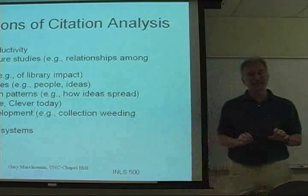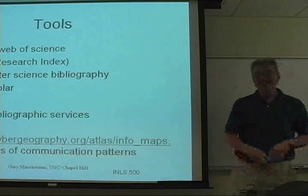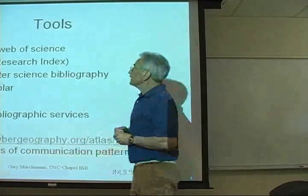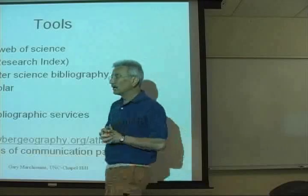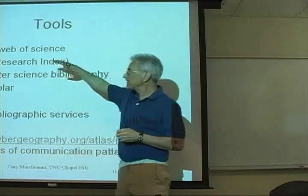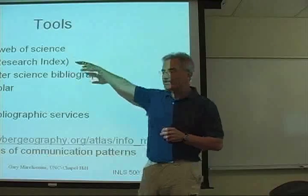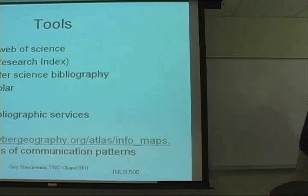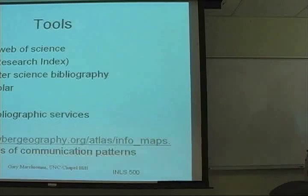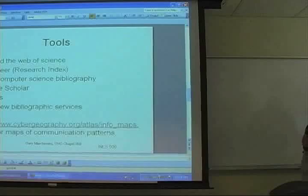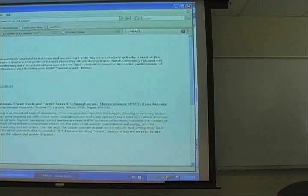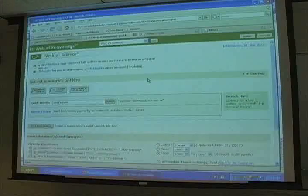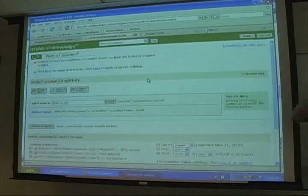There are a lot of practical applications of citation analysis — it's big business as well as good theory. Now there are a bunch of tools out there. ISI, the Institute for Scientific Information, and the Web of Science are the classic examples. You can go, as long as you're on campus or connecting through the library, and you have access to this enormous resource that companies pay lots of money for.